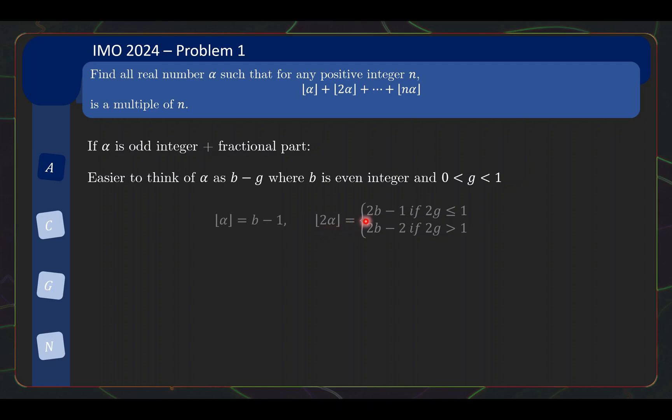Specifically this happens when 2g is less than or equal to 1. But if 2g is bigger than 1, then the floor would be 2b minus 2. And I think you get a sense of how to then deal with this.